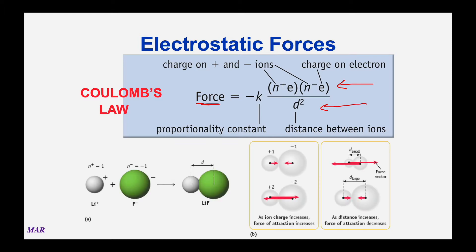These pictures show examples of this. First, a lithium ion and a fluoride ion—when they come together, there's some idealized distance D between the center of the lithium and the central part of the fluoride, and as that distance changes, it affects the bottom part of Coulomb's law. In part B, that's a positive one, negative one handshake—sodium and chloride—pretty strong. The one below is magnesium oxide, a positive two, negative two, which really makes it happen. As the ionic charges increase, the force of attraction increases.